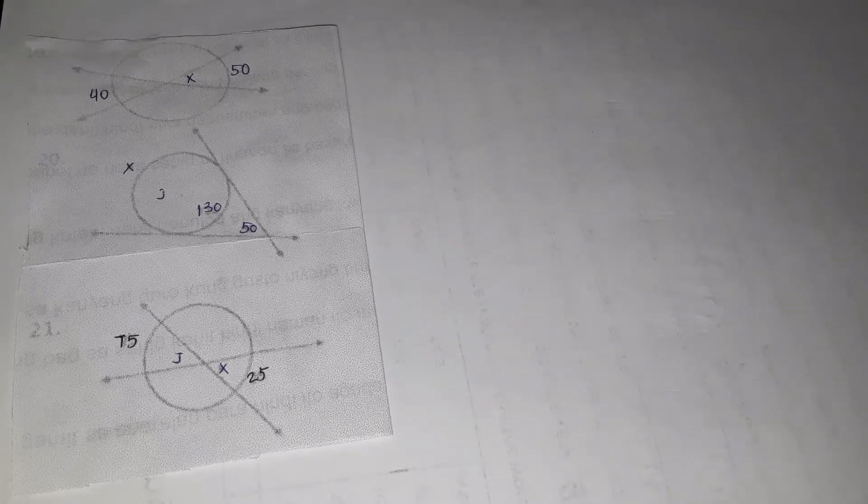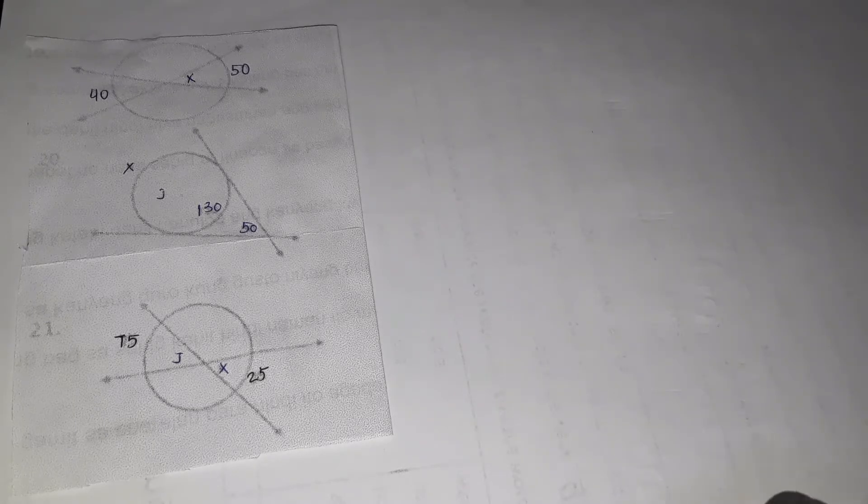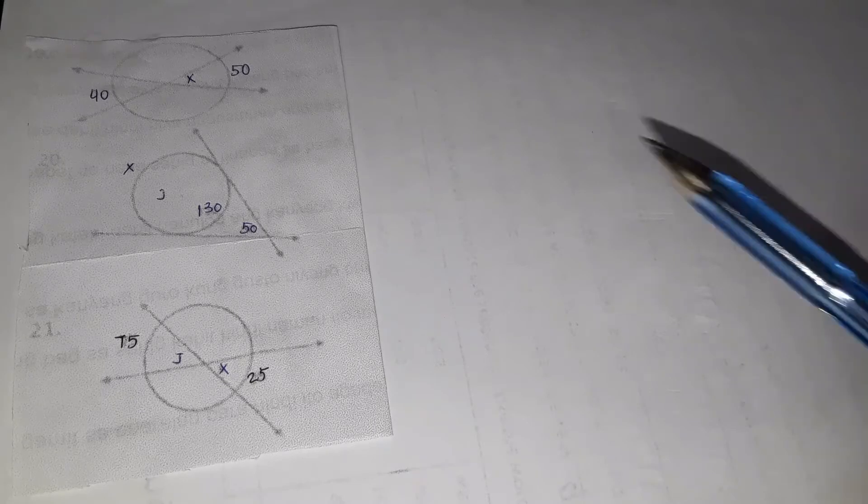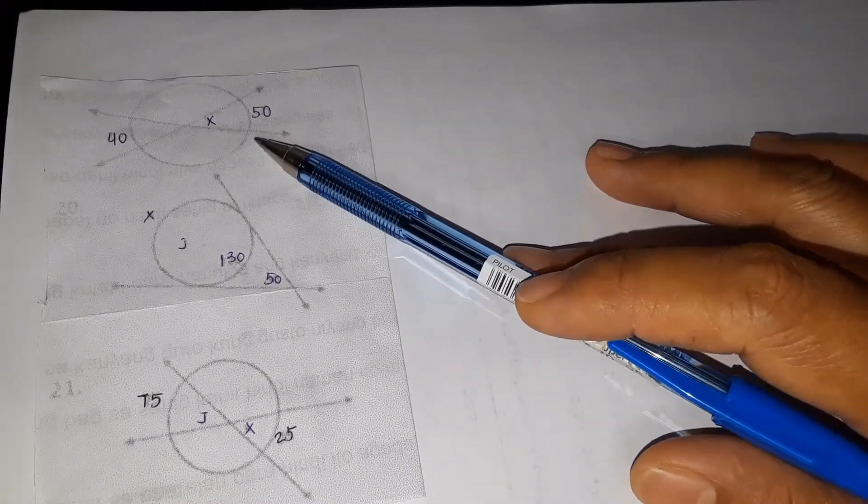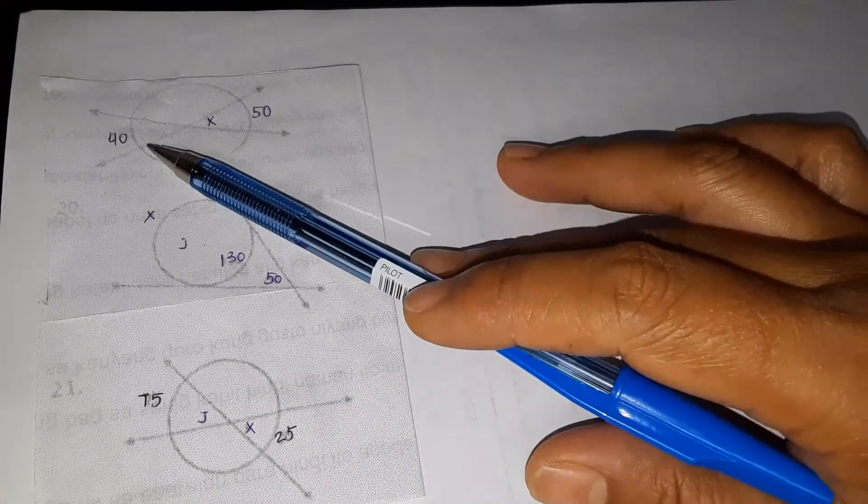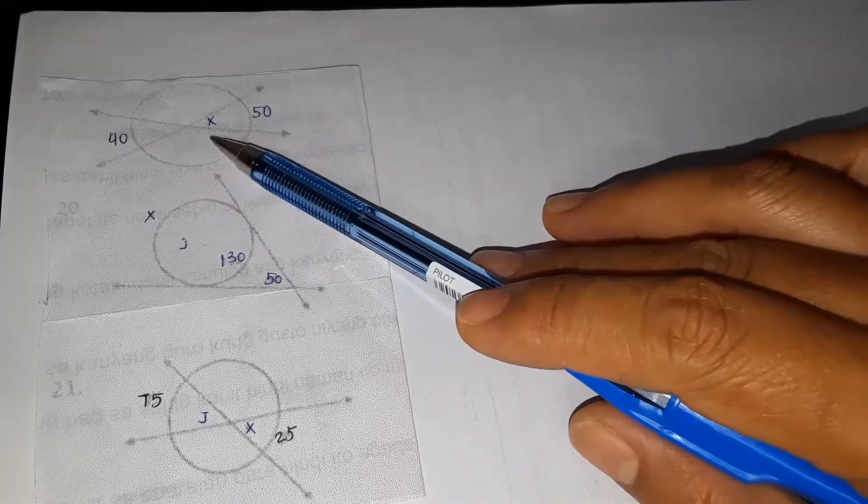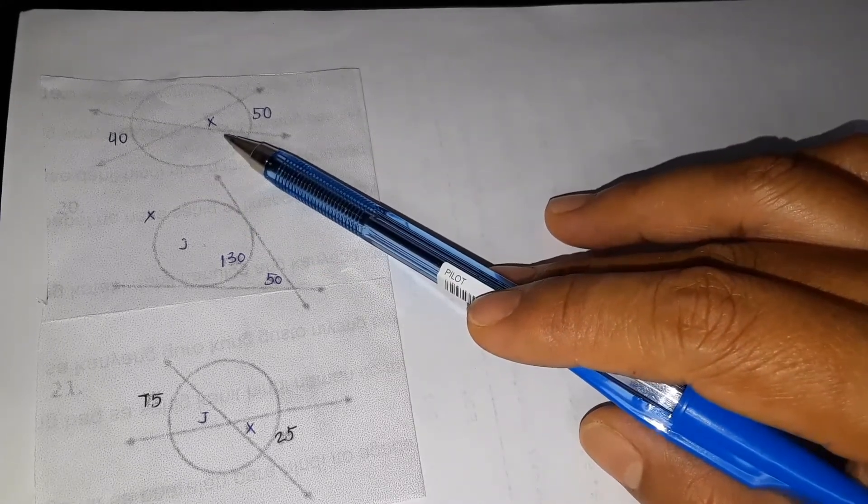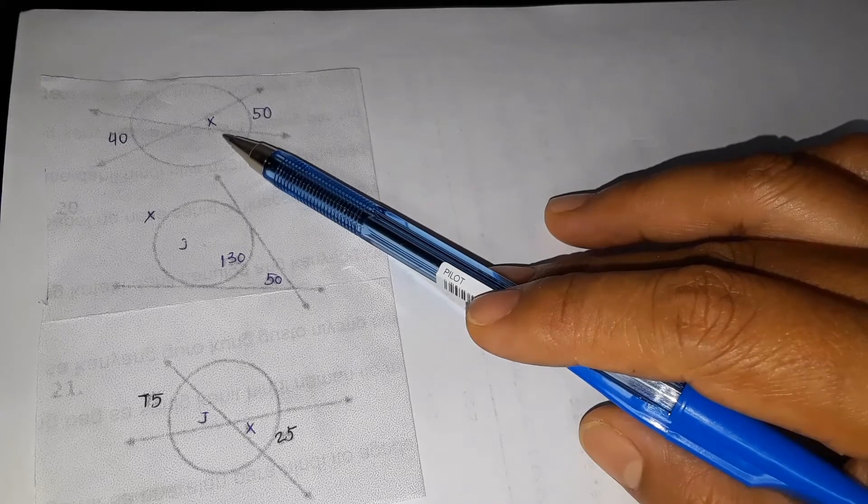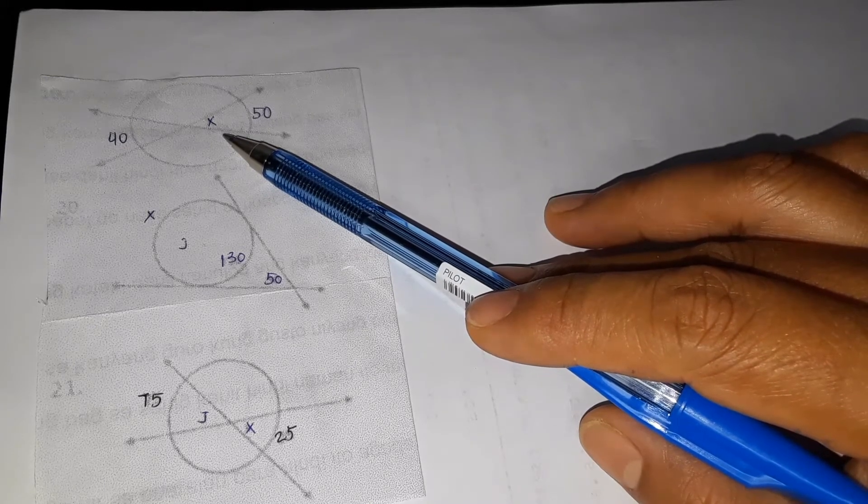So we have here some examples. For our example number 1, two secants that intersect inside the circle. We have here two given the intercepted arc. We have 40 and 50, and we have angle X. So how do we get the value of angle X?